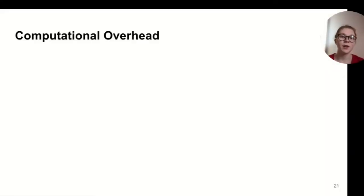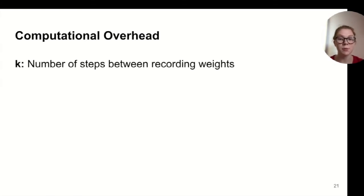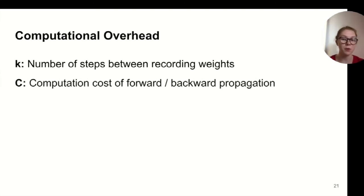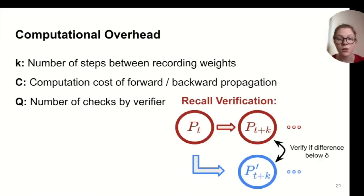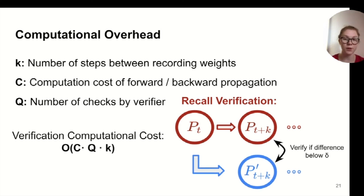Now we'll go over the overhead involved in our verification procedure. Here, we want a proof that is quickly verifiable in most cases and requires somewhat small storage. We'll start with the computational overhead involved in verifying a proof of learning from the prover. First, we'll go over some of the terms involved in the final cost. Recall from before that we use K to represent the number of training steps between recording the weights in the proof. We will use C to denote the computational cost of one forward and backward pass for backpropagation. And Q is the number of checks, or the number of largest updates we need to verify. So we have the verification cost is polynomial in C, Q, and K.